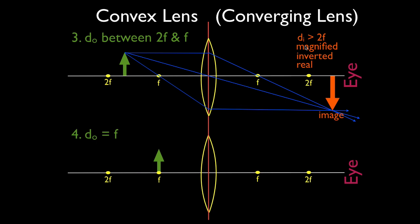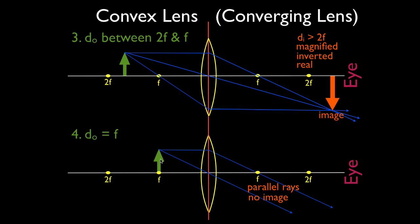Now the object is right at F. We draw the first ray the same way — parallel out through F. We can't really draw the second ray because going F-parallel would send the ray straight down and it wouldn't go through the lens toward our eye, so we ignore it. We can draw the third ray straight through the center of the lens. You'll notice these light rays are now parallel — parallel light rays don't intersect. In all previous cases, the image occurred where light rays intersected. No intersection means no image. When the object is at F, there is no image because the light rays are parallel.